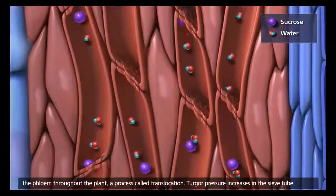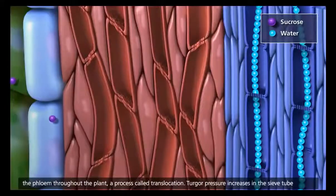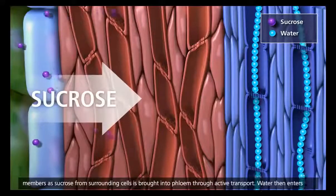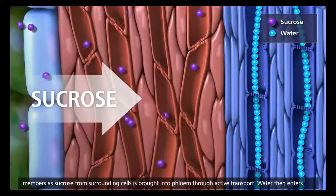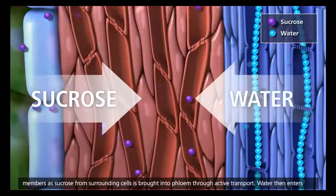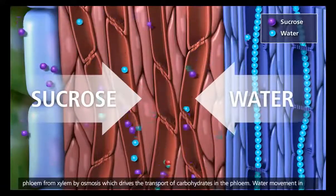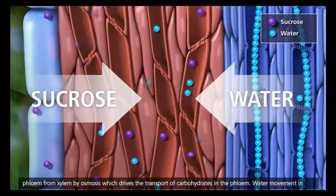Turgor pressure increases in the sieve tube members as sucrose from surrounding cells is brought into phloem through active transport. Water then enters phloem from xylem by osmosis, which drives the transport of carbohydrates in the phloem.